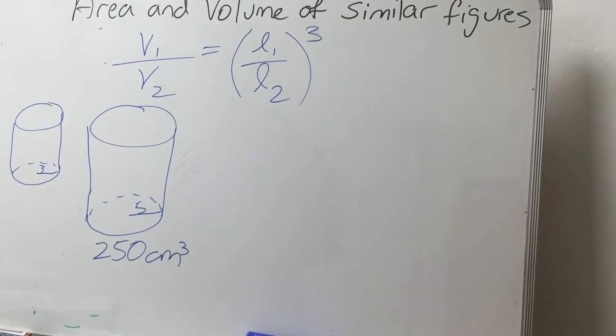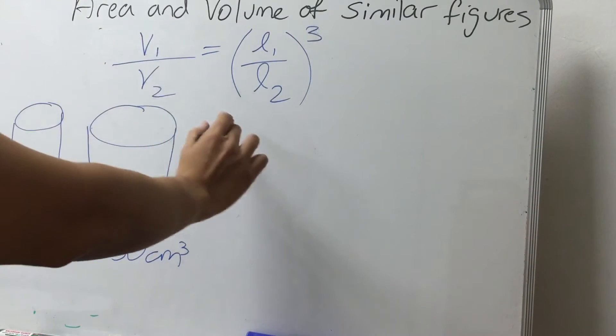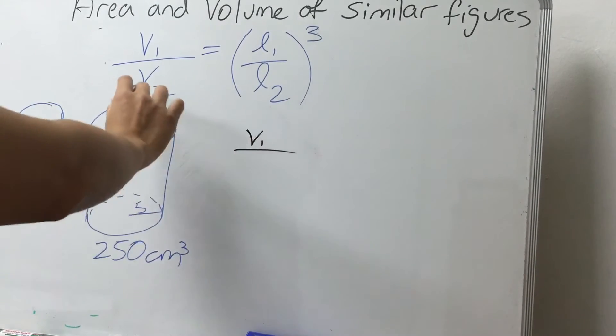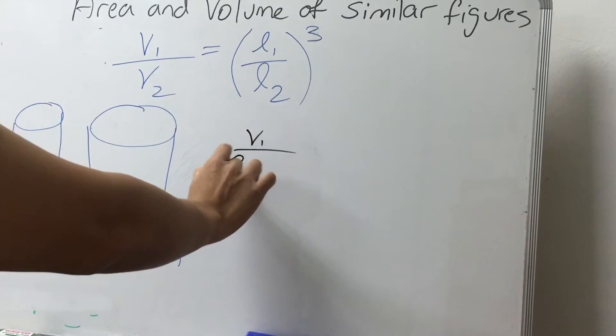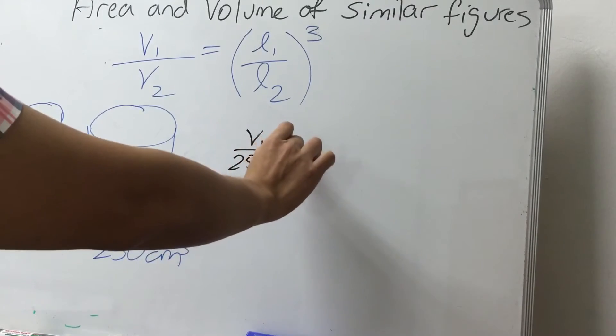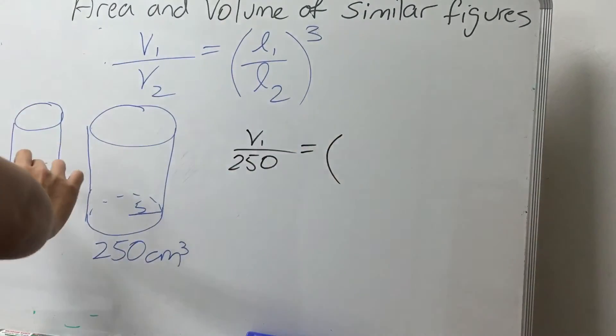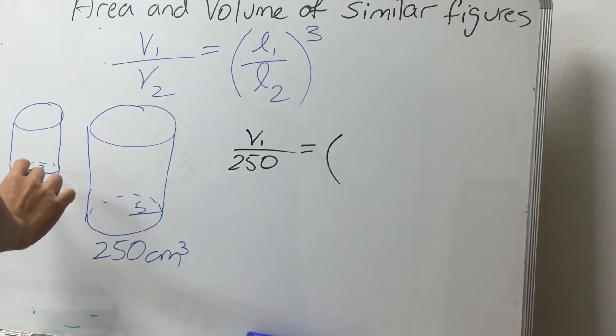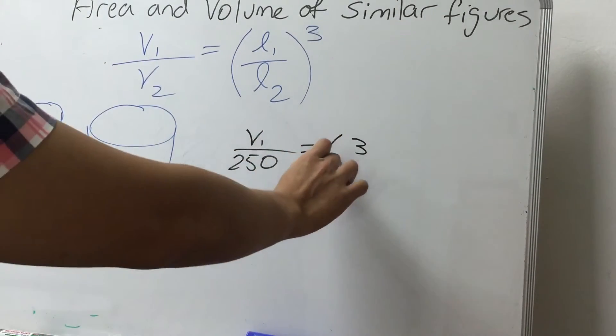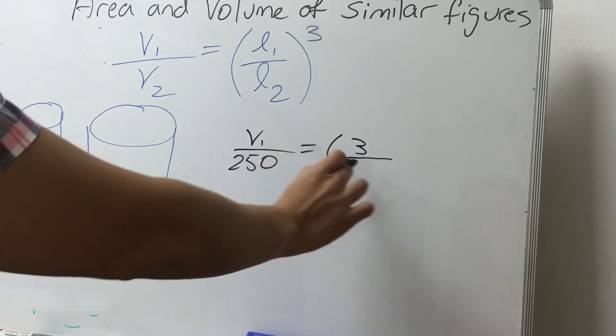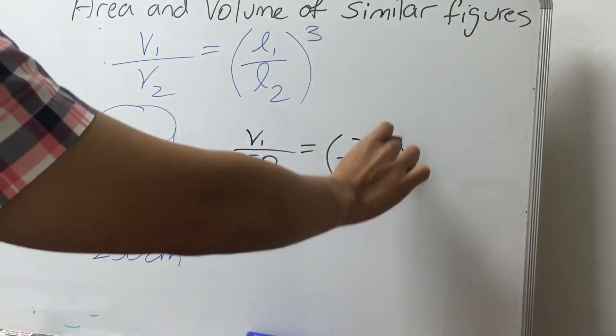So applying our formula V₁ over V₂ equals to L₁ over L₂ cubed, we can solve for the volume of the smaller cylinder. So let's say the volume of the small cylinder is V₁, volume of the big cylinder is V₂, which is 250 cm cubed. This will be equal to the similar length of the smaller figure. In this case, this is 3 over the length of the big cylinder, which is 5.